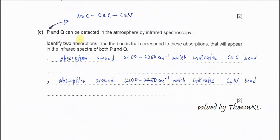Part C: P and Q can be detected in the atmosphere by IR. Identify two absorptions and the bonds that correspond to this absorption. Very easy. You need to know the characteristics for the structure or the bonding in the molecule. In P and Q, they have the C≡N triple bond and the C≡C triple bond. So from the tables given, you should be able to find this absorption, means absorption around 2150 to 2250, and this one indicates the C≡C triple bond.